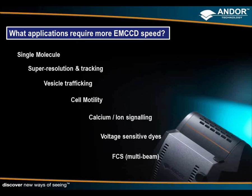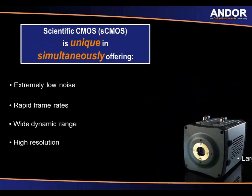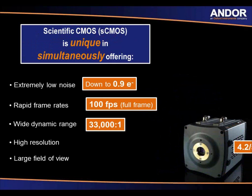Moving on to sCMOS cameras — sCMOS is extremely different from EMCCD or CCD architecture. The scientific CMOS is unique in simultaneously offering extremely low noise, rapid frame rates, wide dynamic range, high resolution, and a large field of view. Noise can be as low as 0.9 electrons inherently in the camera itself — no amplification step is required. Rapid frame rates of 100 frames per second full frame are achievable using either 5.5 or 4.2 megapixel sensors. A 33,000 to 1 dynamic range allows simultaneously seeing very weak and very bright signals in one image.